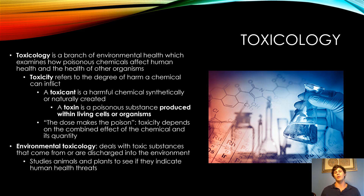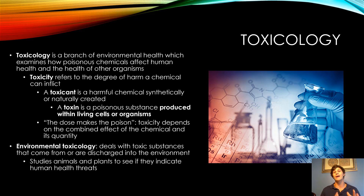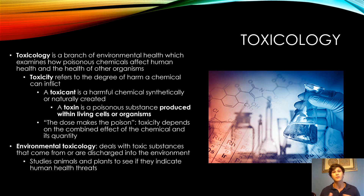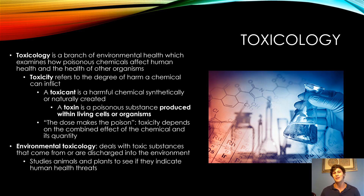A toxicant is any harmful chemical created either synthetically or naturally — it's a catch-all term. However, a toxin specifically is a toxic substance created by a biological organism; it must originate within the cells of a living organism. So venom from a snake or poison from a poison dart frog are toxins, whereas synthetic chemicals like pesticides or disinfectants are synthetic toxicants. These distinctions will be on your quizzes and potentially the final exam.